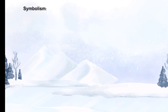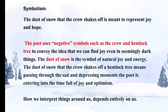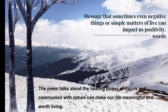The next literary device that the poet uses is symbolism — the use of symbols. The dust of snow that the crow shakes off is meant to represent joy and hope. Hence, the poet uses negative symbols such as the crow and hemlock tree to convey the idea that we can find joy even in seemingly dark things. The dust of snow is a symbol of natural joy and energy. The dust of snow that the crow shakes off a hemlock tree means that passing through the sad and depressing moments, the poet is entering into a time full of joy and optimism. How we interpret things around us depends entirely on us. Thus, we can conclude our analysis with a simple message that sometimes even negative things or simple matters of life can impact us positively.